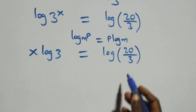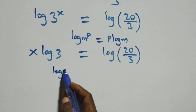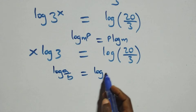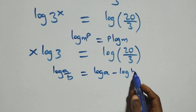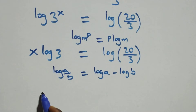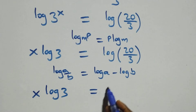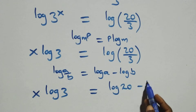Then we apply the log quotient rule: log(a over b) is the same thing as log a minus log b. So this becomes x log 3 equals to log 20 minus log 3.